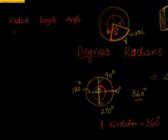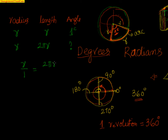Now radius is R again, but the length is 2πR — the circumference of the circle is 2πR. What will be the angle? Using simple proportion: R over 1 equals 2πR over X. R and R cancel, so X equals 2π. That means 2π radians. You also know that when you go around the full circumference, the number of degrees is 360. So one revolution with degrees is 360, one revolution with radians is 2π radians.